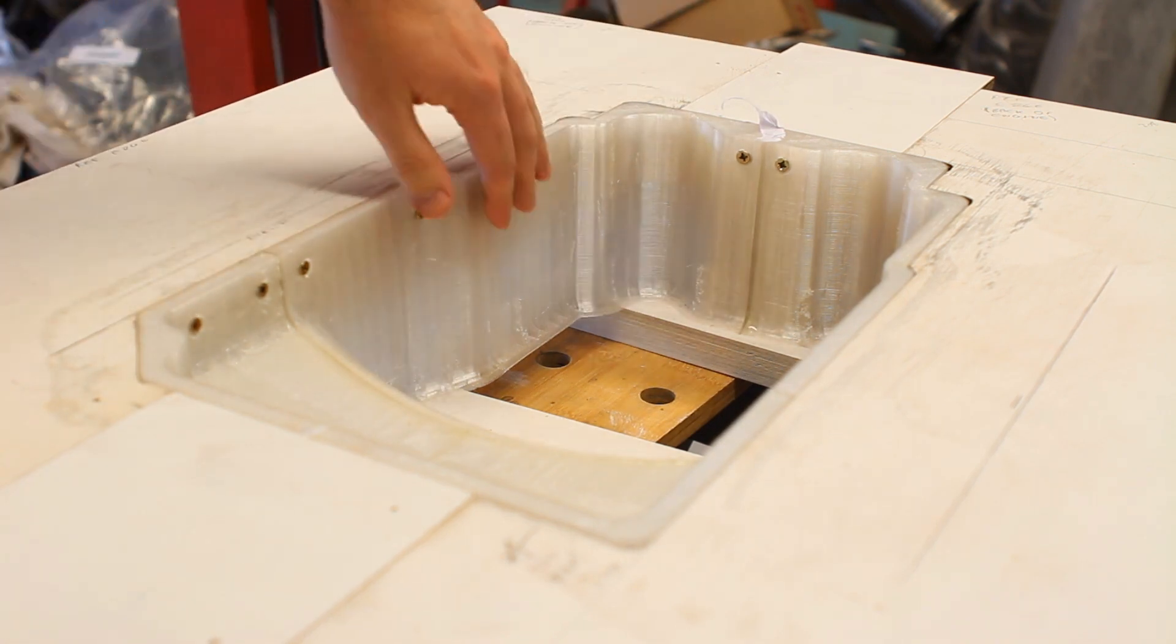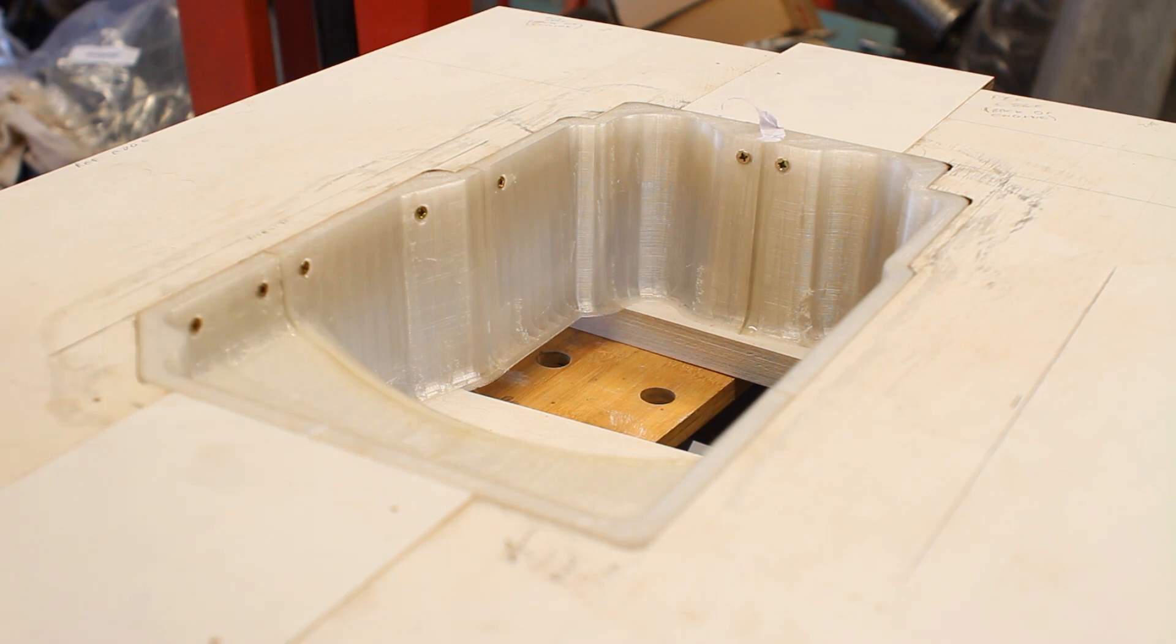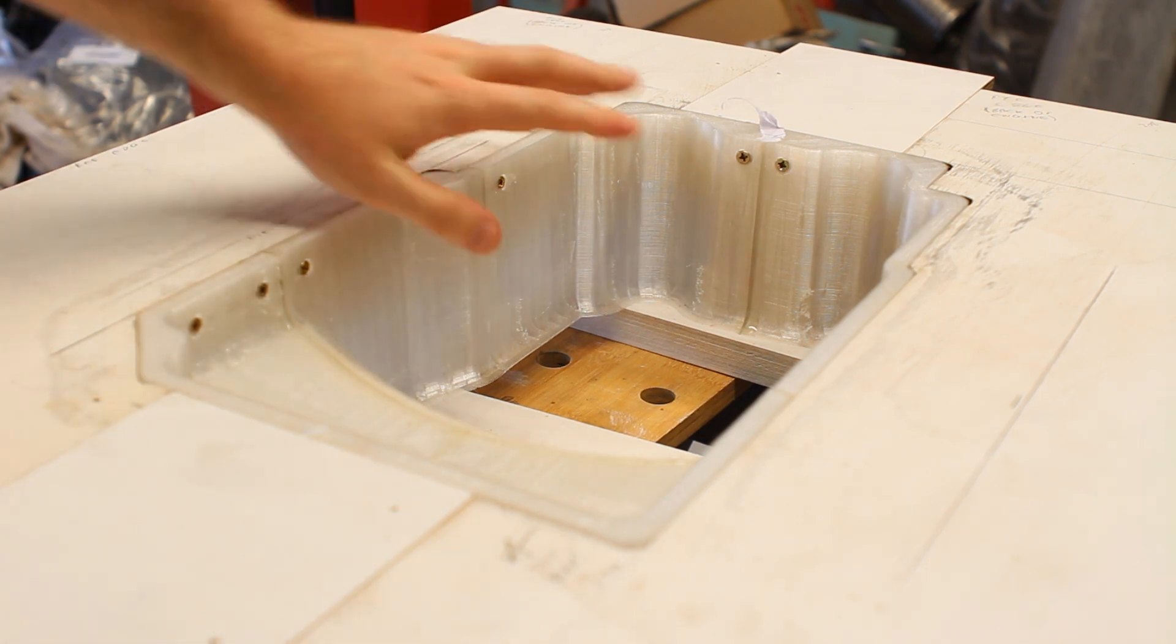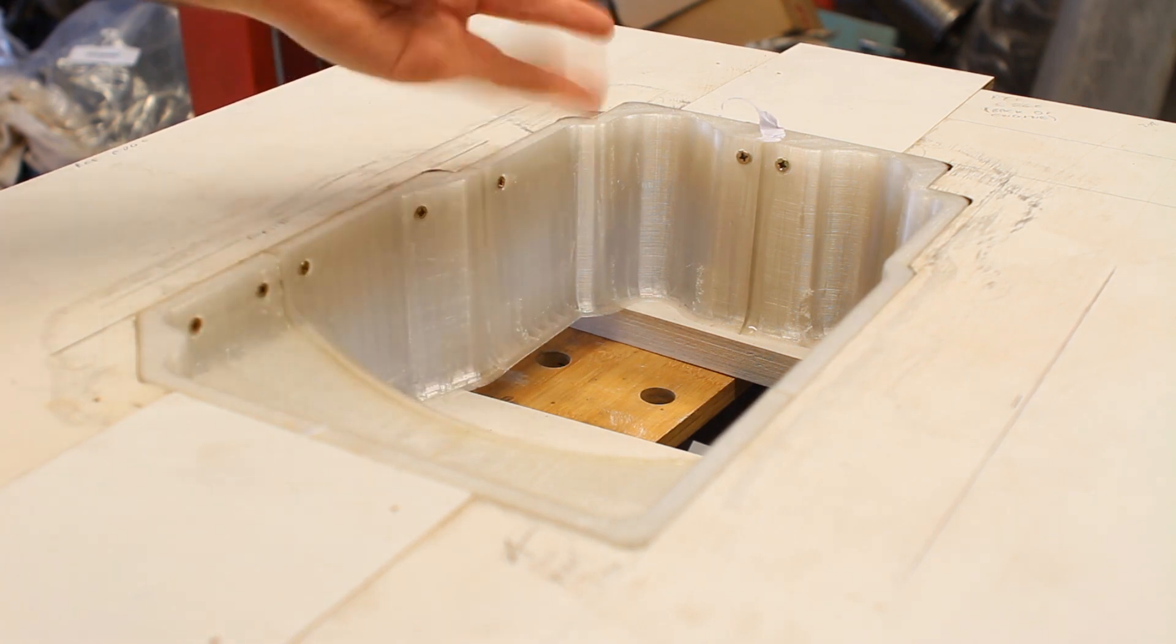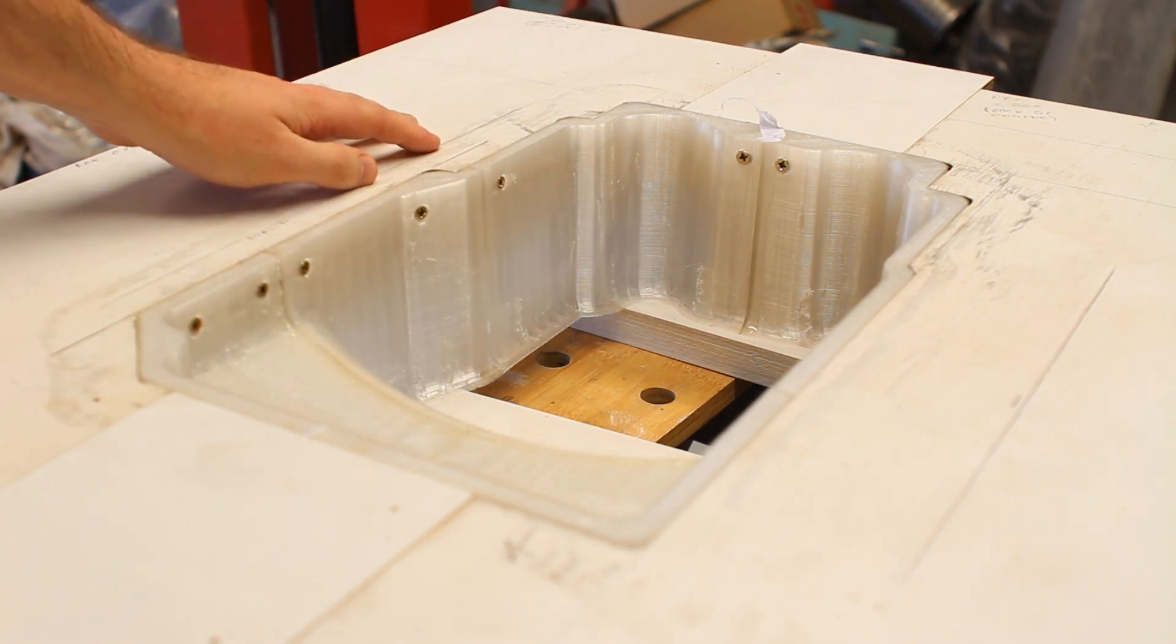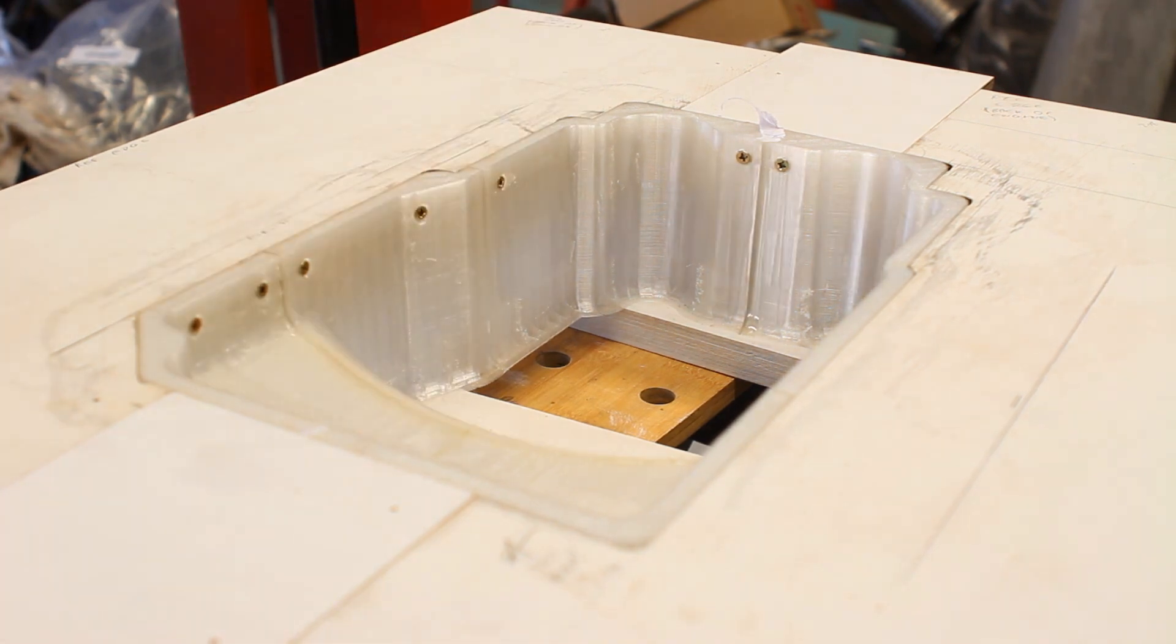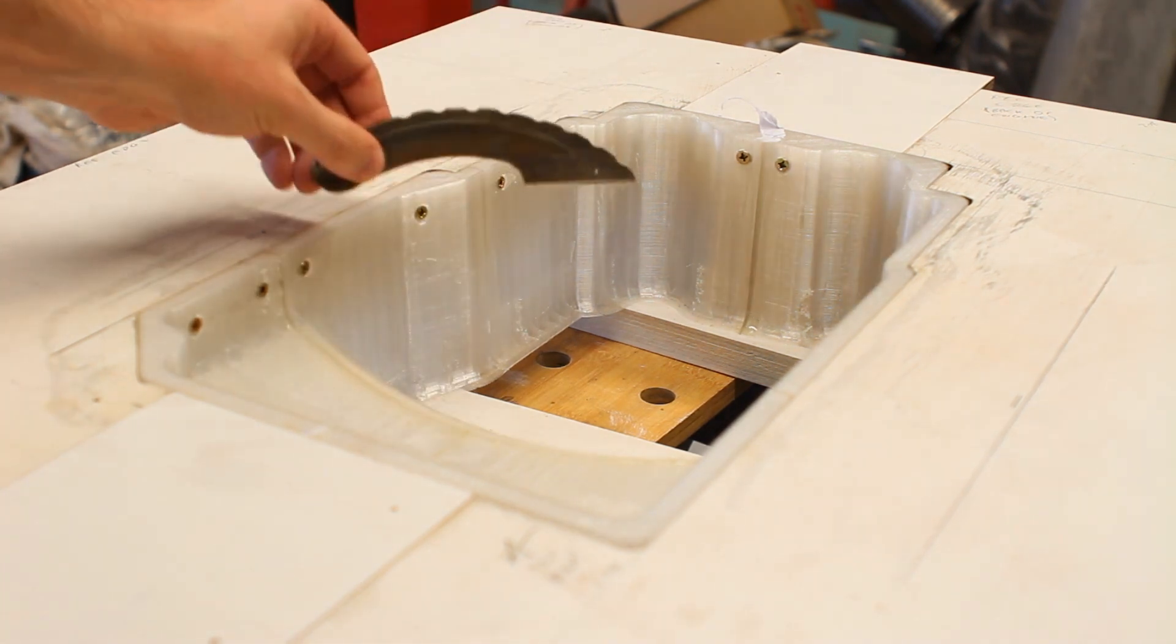So I'm going to sand it, but PLA's kind of funny stuff to sand. It clogs the paper because it softens at such a low temperature that simply rubbing on it softens it enough that it doesn't make dust anymore. So I'm going to try and do the bulk by scraping it with my marking knife.